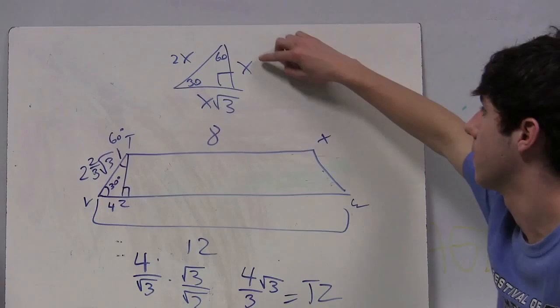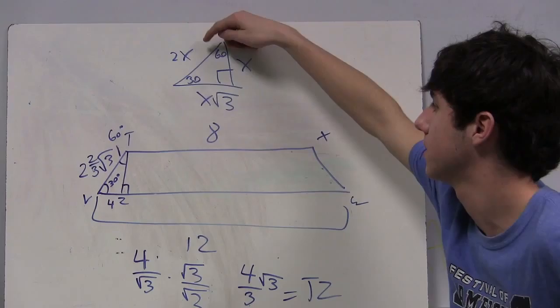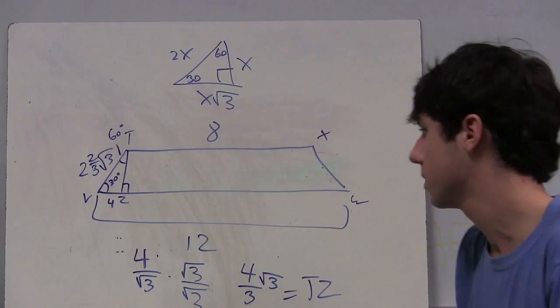This is a 30-60-90 triangle. In a 30-60-90 triangle, you have the sides X, 2X, and X times the square root of 3.